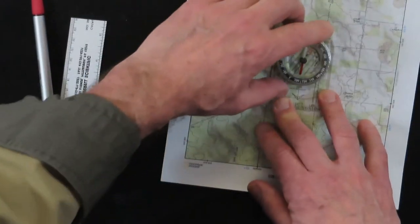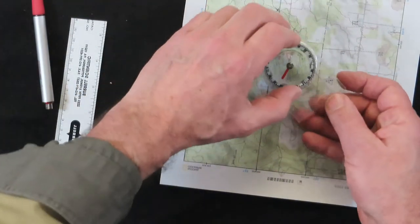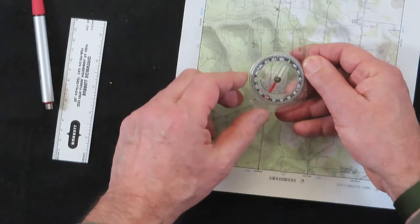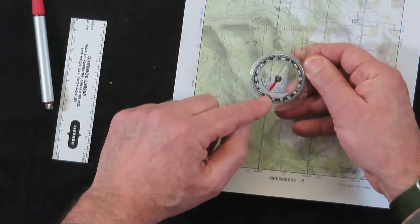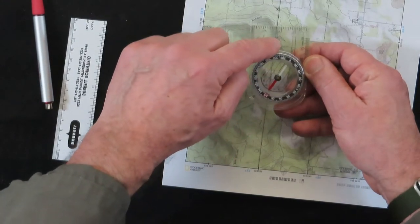You would rotate your baseplate to where the 210 hash mark is lined up with your direction of travel. So now all you have to do is pick up your compass. And you would rotate that until the north end of the needle is pointing north. And this is my direction of travel.